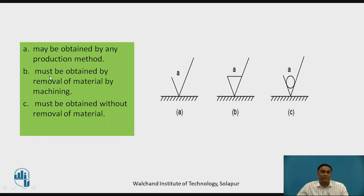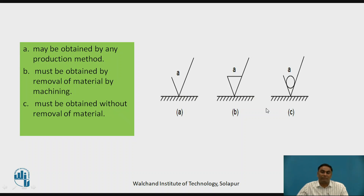The second symbol indicates the surface must be obtained by removal of material by machining only. If this horizontal line is added to the triangular symbol, it means machining is required for those special surfaces. The third symbol, as discussed earlier, indicates there is no need of any material removal — by default, the roughness value is maintained by the manufacturing method only.